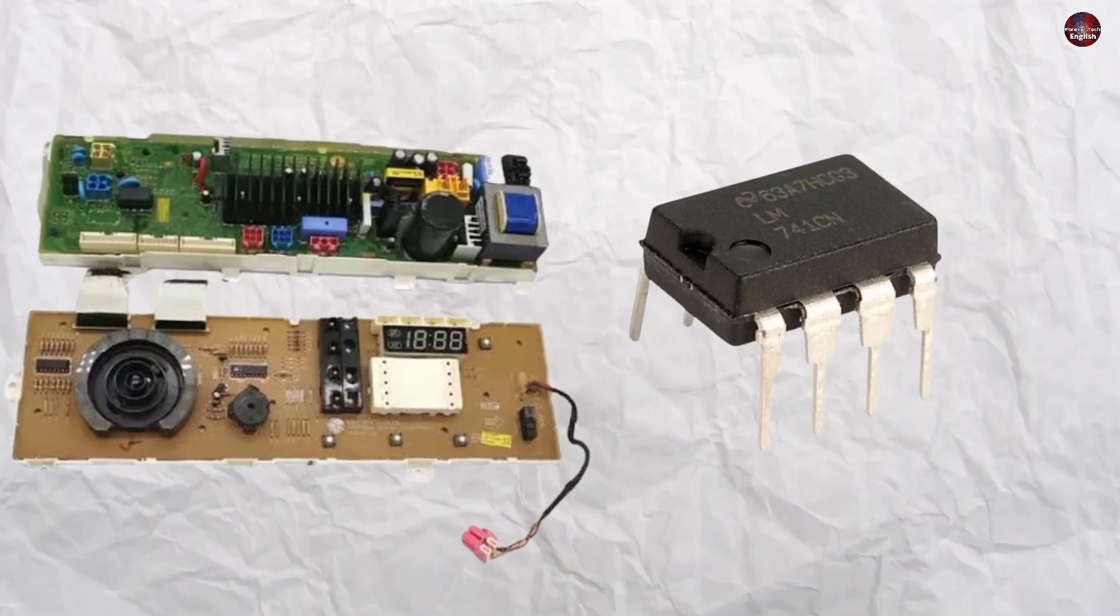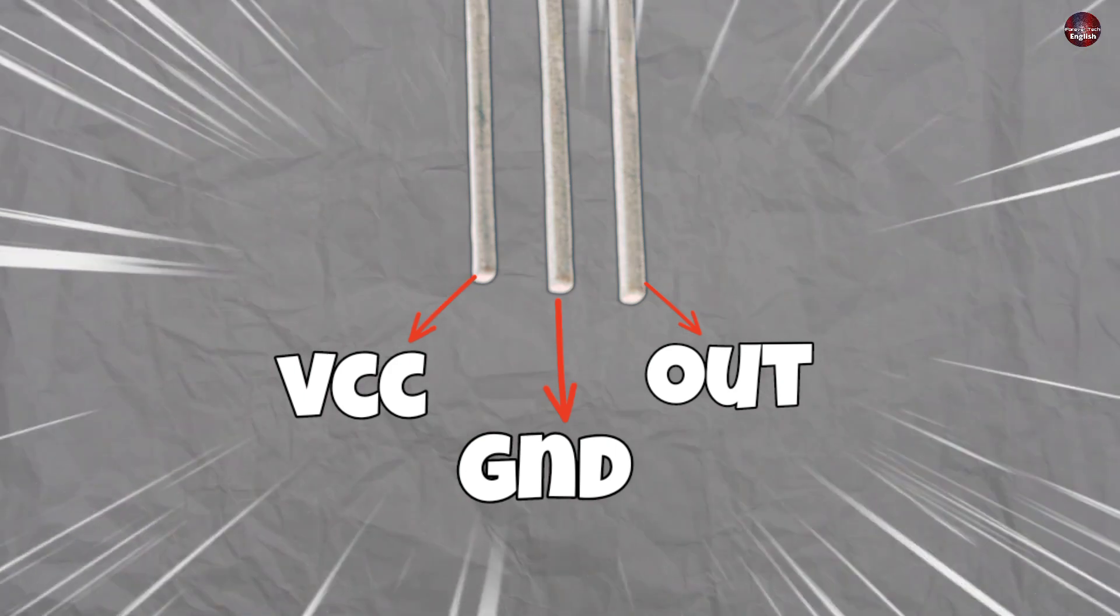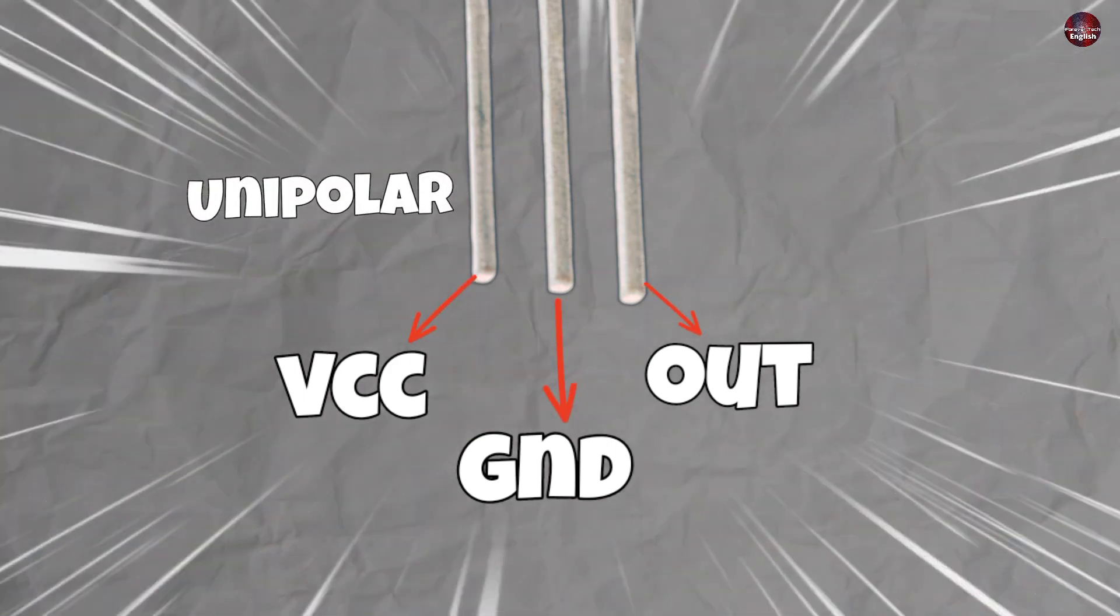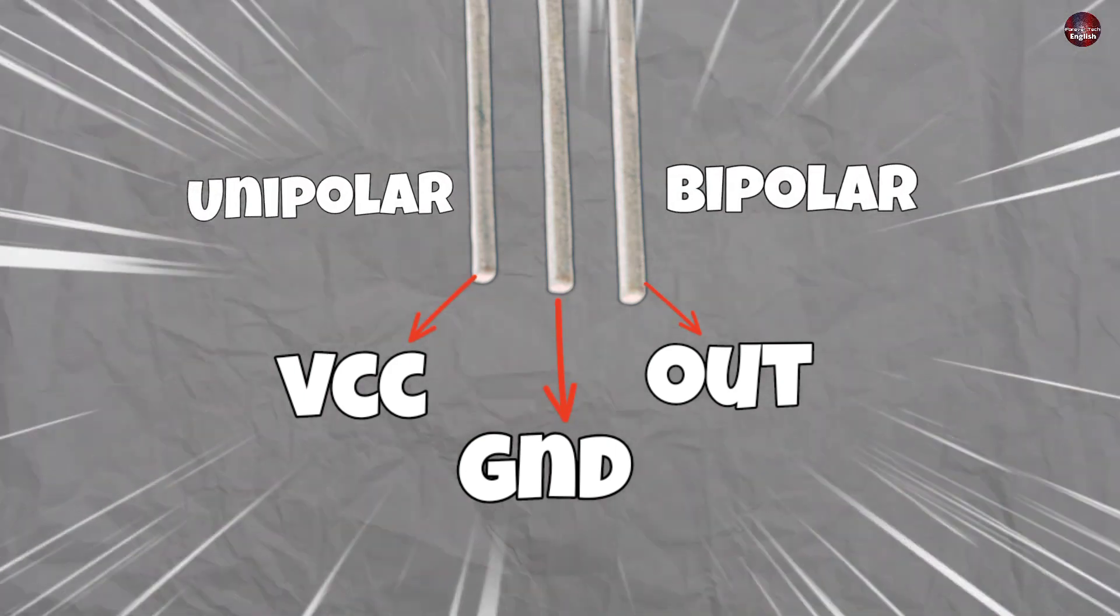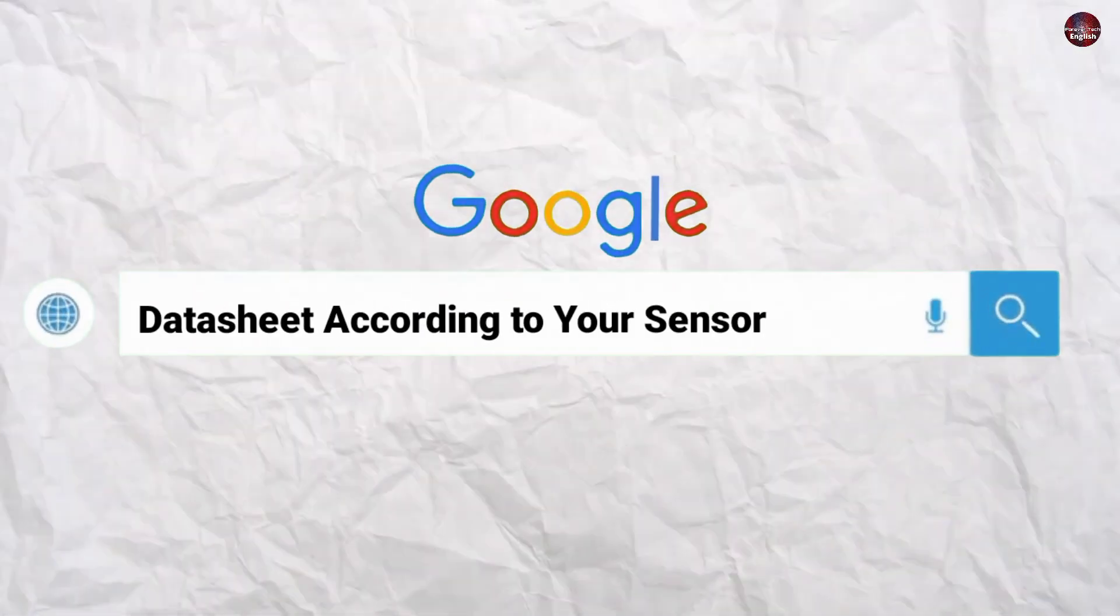the analog signals are converted to digital signals. The pin configuration of the unipolar hall sensor and this bipolar hall sensor are the same. But if you have a different hall sensor, check its datasheet, and check it according to it.